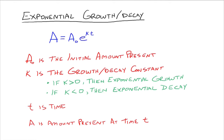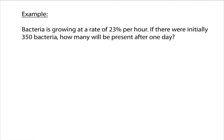This is our general exponential growth and decay model. There are other variations of it, but this is the one we're going to talk about right now. Here's an example: bacteria is growing at a rate of 23% per hour. If there were initially 350 bacteria, how many will be present after one day? We note that T here is in hours, and initially there are 350 bacteria, so A sub zero is 350.